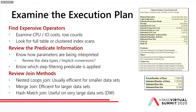I review the predicate information — know how parameters are being interpreted, look for implicit conversions, review data types, and know which step the filtering predicate is applied. You want the data filtered to get the least amount of data first in the early steps of an execution plan, rather than joining everything together and throwing it out at the end — that's wasteful.